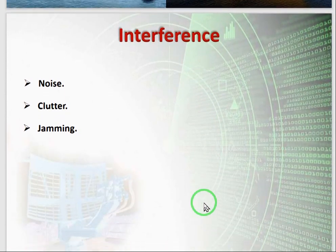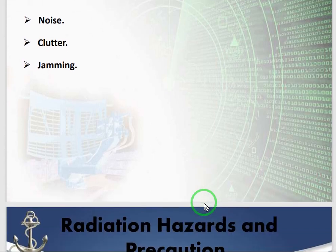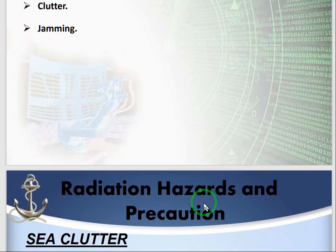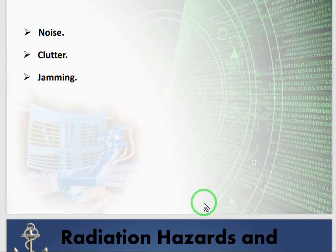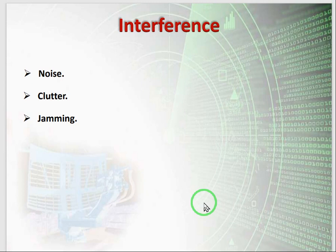The next topic we start today is interference. There are three types of interferences: one is noise, second is clutter, and the third is jamming. Noise is basically generated when a signal interferes with some other signal, or atmospheric parameters enter into the signal — then the product will be noise.